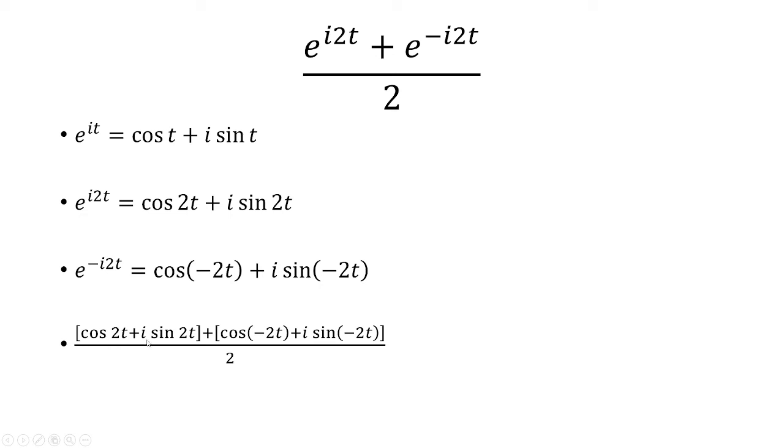So we have e^(i2t) as the first bracket, and then e^(-i2t) as the second bracket. Notice that the negative out here, inside the sine, goes outside because sine is an odd function. Meaning if I put a negative inside, it's going to come outside.